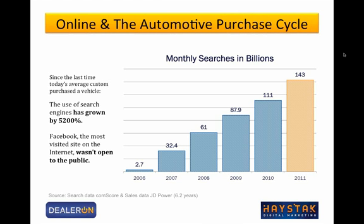Regarding digital trends, this is a slide that I've had with me for about a year now, and it basically shows how much search has grown over the past six years. In 2006 there were 2.7 billion searches per month, and now in 2011 we're at 143 billion searches per month. Search has exploded — it's a very influential piece in how consumers shop for a vehicle, and it has grown by 5,200 percent.